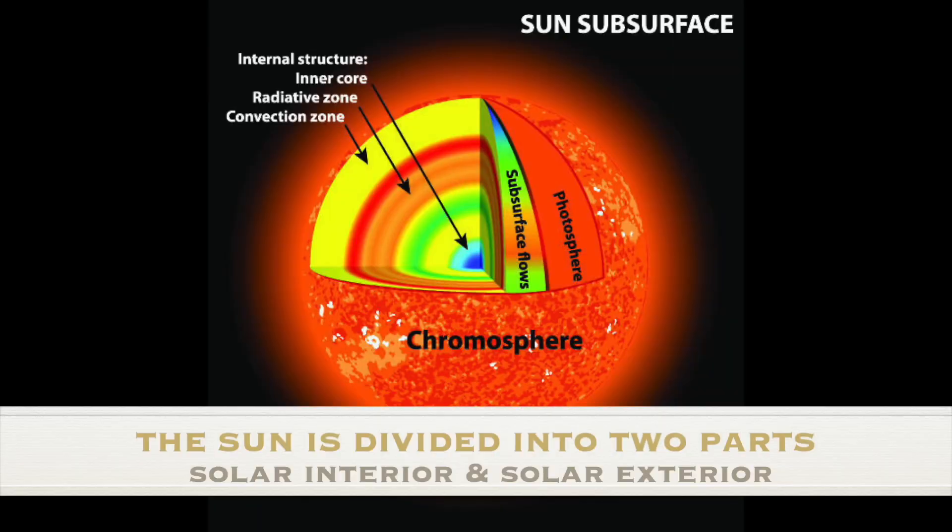The Sun is divided into two parts: solar interior and solar exterior. The solar interior consists of the core, radiative zone, and convective zone. Meanwhile, the solar exterior consists of the photosphere, chromosphere, and corona.